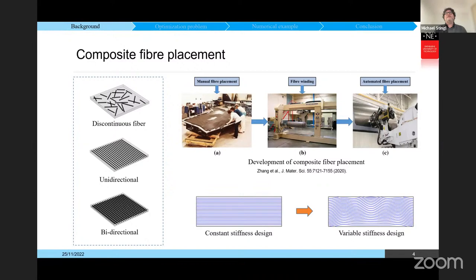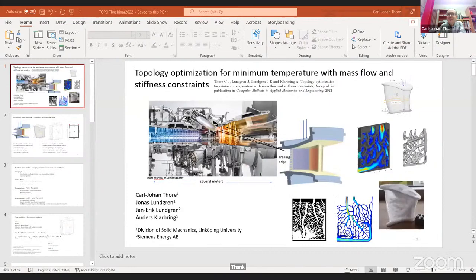The second speaker is Karl Johan Torre, senior associate professor at the Division of Solid Mechanics at Linköping University in Sweden, with a special focus on robust topology optimization and design of active structures. He will present a paper titled 'Topology Optimization for Minimum Temperature with Mass Flow and Stiffness Constraints,' co-authored by Jonas and Jan Eric Lundgren and Anders Gabring, published in Computer Methods in Applied Mechanics and Engineering this year. Please go ahead, Karl Johan.